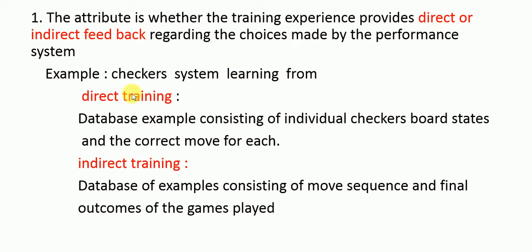Considering the checkers system as an example: direct training comes from a database of examples consisting of individual checkers board states and the correct move for each. Indirect training comes from database examples consisting of move sequences and the final outcomes from games played. So direct examples are specific board states with correct moves, while indirect training is based on the outcomes of games played.